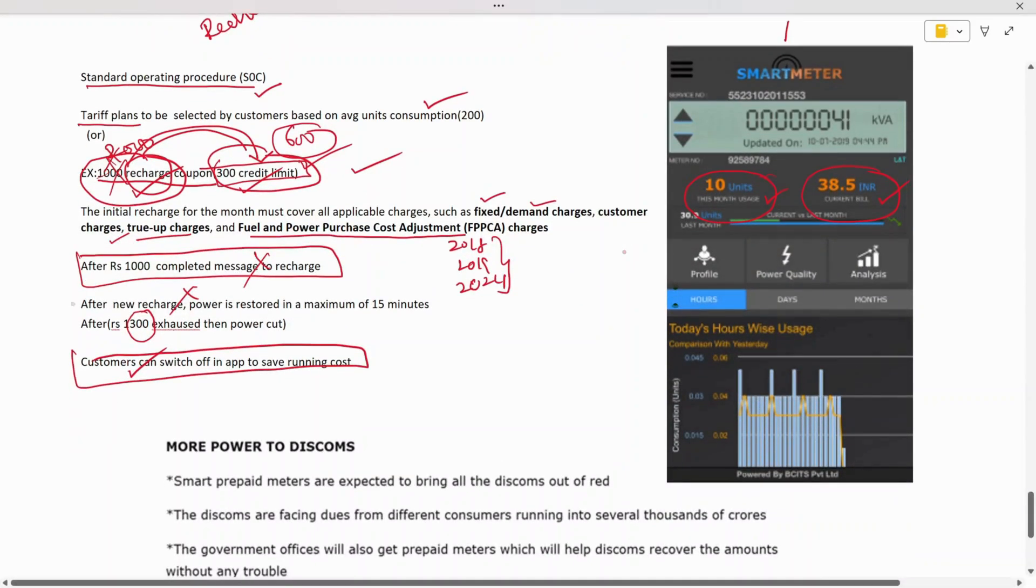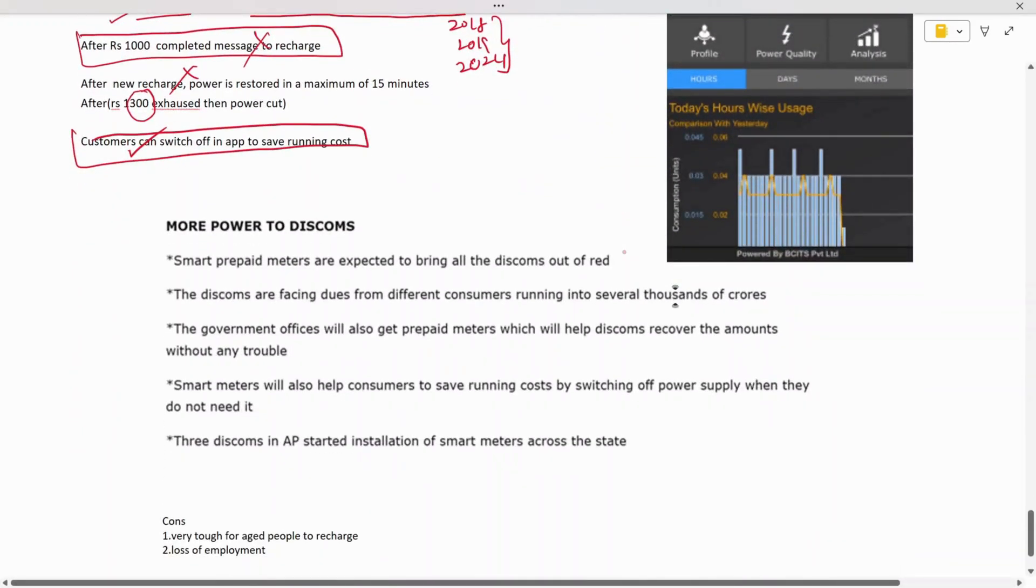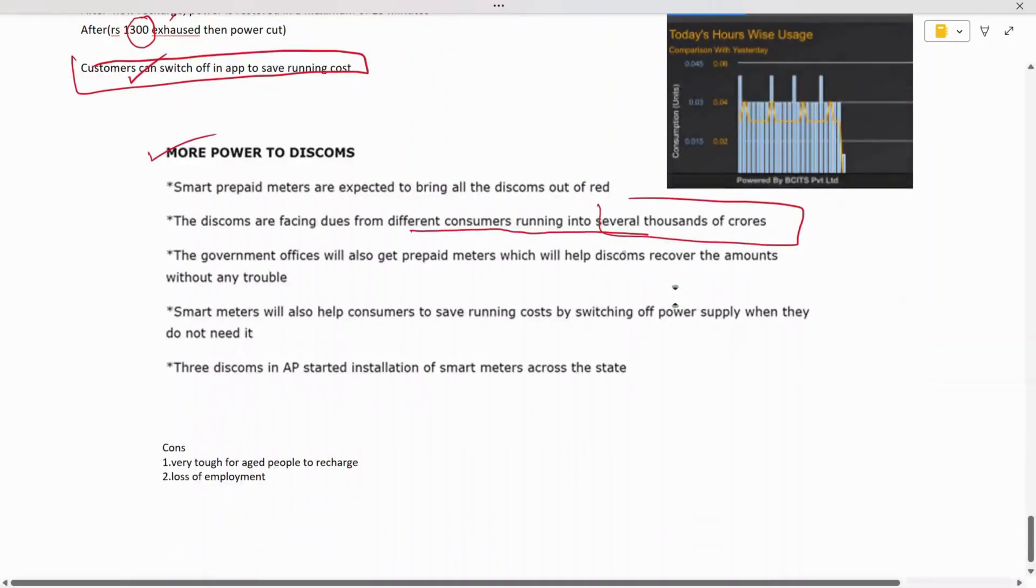What are the advantages of smart meters? Smart meters are expected to bring all the discounts out of red. Many customers, public employees, and government offices are not paying amounts, which makes it very tough to operate SPDCL. Thousands of crores have not been paid. This will help the government, so indirectly there are more benefits to the government than to the public.